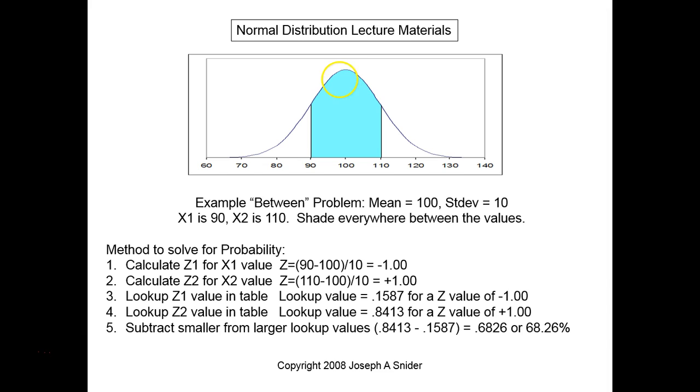The only other area that you're concerned with is a between. So in this case, what's being represented is it wants to know the probability between 90 and 110. So in this case, you'll notice that down here you have five steps, but they're very similar to what you've done before.